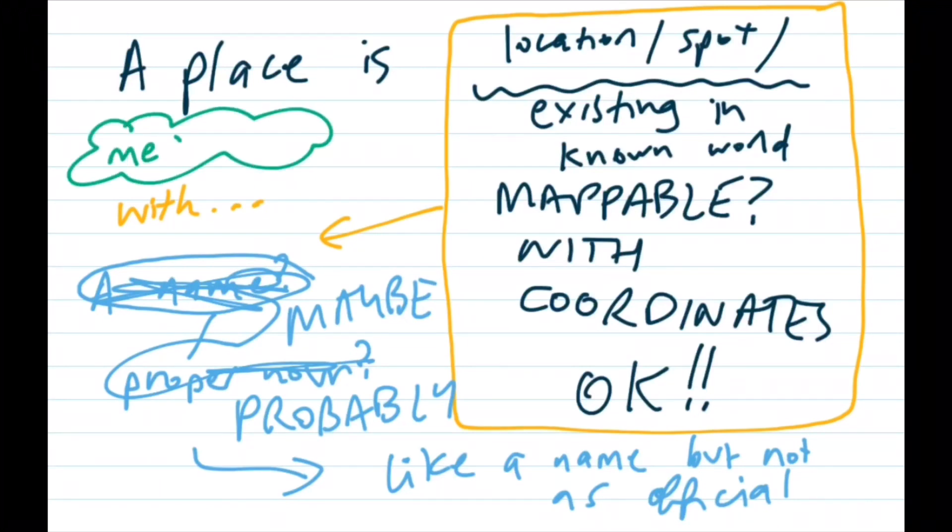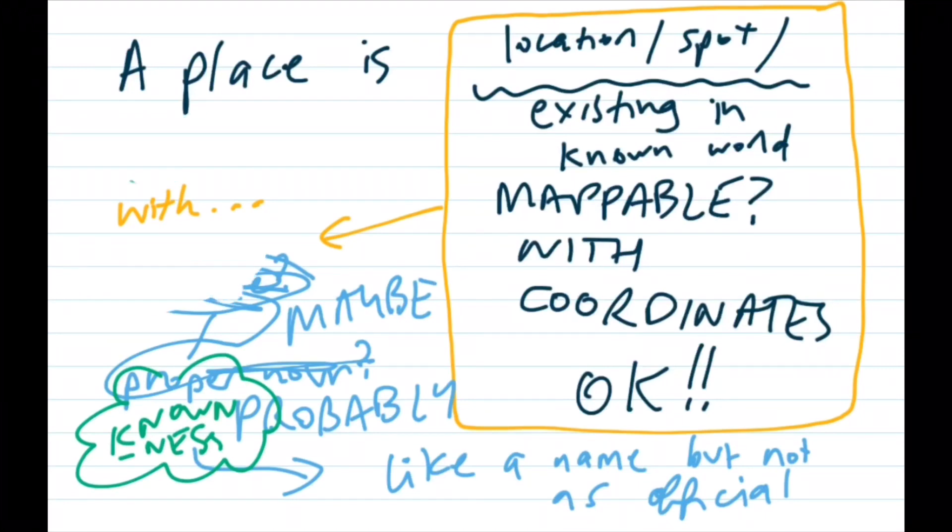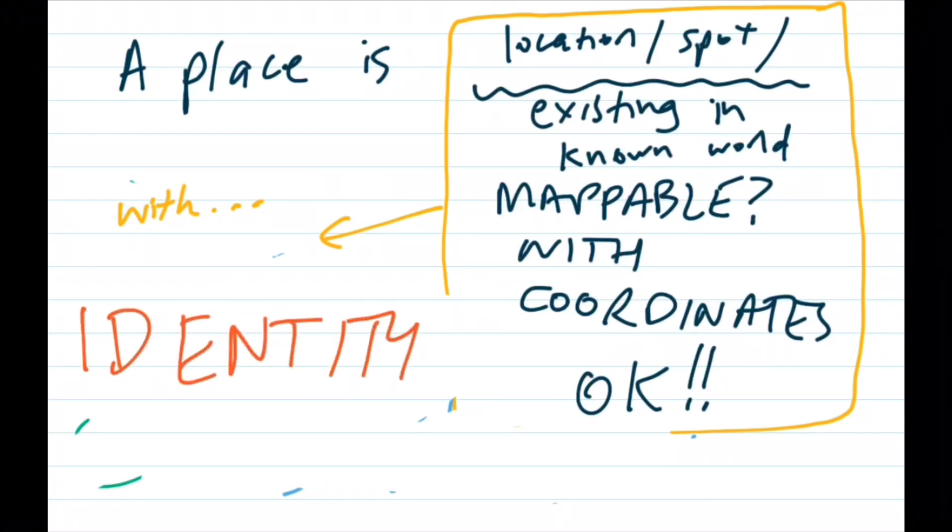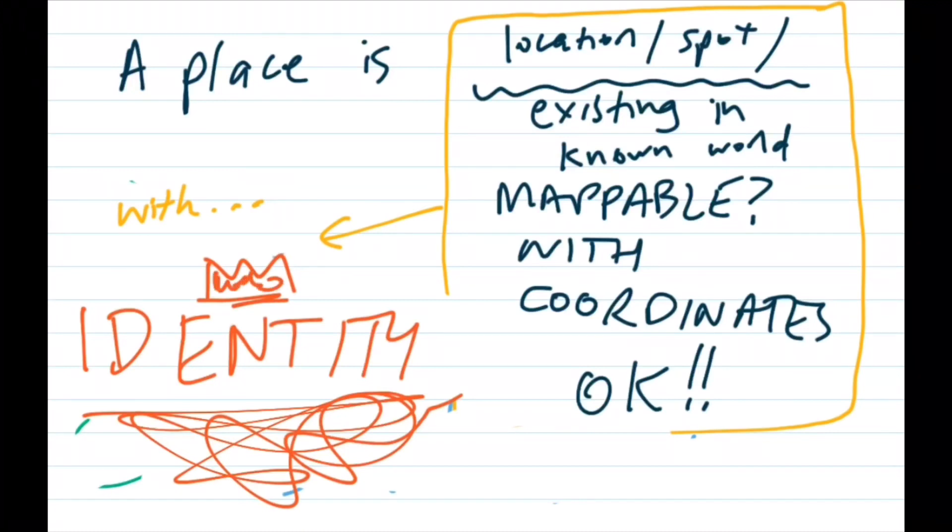It needs to be known for something more than just its address. And we need a word for all this wishy-washy stuff, name that isn't a name, that we can put in our nice, neat little definition of a place. If only there was a word for name, not a name. Oh, wait. Identity. A place is a location with an identity.